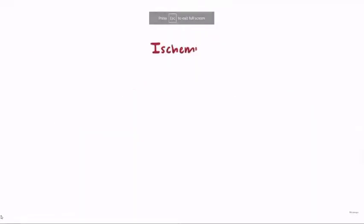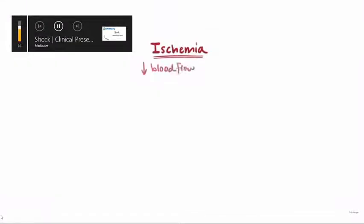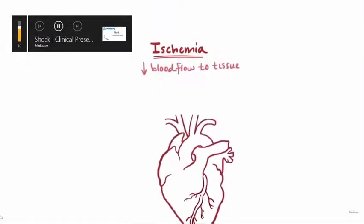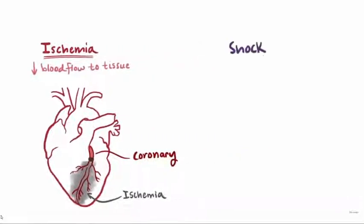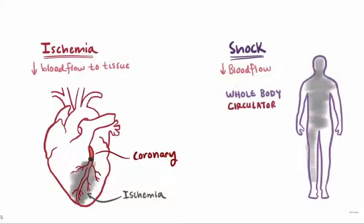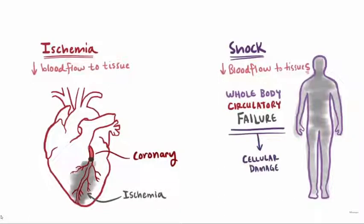When we talk about ischemia, we are usually referring to a lack of blood flow to a specific area of tissue — for example, with a heart attack, a coronary artery gets blocked, causing localized damage to the left ventricle. Shock is like ischemia but on a global scale: it is a whole-body circulatory failure where blood flow to tissues is dangerously low, leading to cellular injury, possibly damaging multiple organs, and even leading to multiple organ failure if not treated immediately.